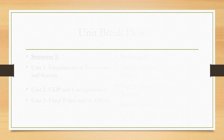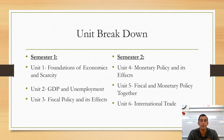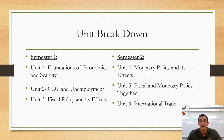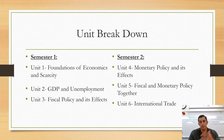Each semester we cover three units. In the fall semester, we're nearly done with Unit 1, the foundations of economics. Unit 2 covers GDP, unemployment, and inflation. Unit 3, our final fall unit, is on fiscal policy and its effects. In the spring, grades refresh for a fresh start. Unit 4 covers monetary policy, Unit 5 combines fiscal and monetary policy, and Unit 6 is our final unit on international trade. We then have about a month of review before the AP exam.